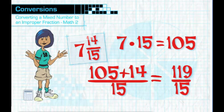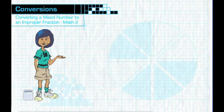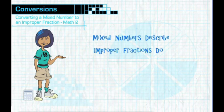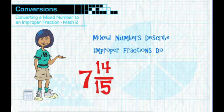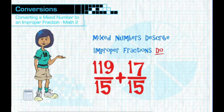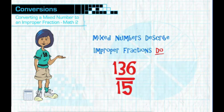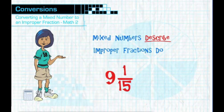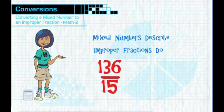You can always check your work by using a calculator, or by converting one hundred nineteen-fifteenths using division to see if you get the mixed number seven and fourteen-fifteenths. See how you had no problem doing the math when you added one hundred five-fifteenths and fourteen-fifteenths? If you need to add seven and fourteen-fifteenths and seventeen-fifteenths, use the improper fraction for seven and fourteen-fifteenths. Since you already know it's one hundred nineteen-fifteenths, you can add that to seventeen-fifteenths and get one hundred thirty-six-fifteenths. When you convert that, you get the mixed number nine and one-fifteenths. Improper fractions do the math; mixed numbers describe. Both are useful.